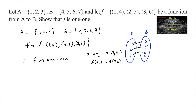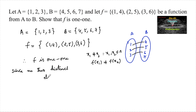Since no two distinct elements of A have the same image in B, the function f is confirmed to be one-to-one.